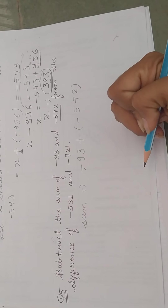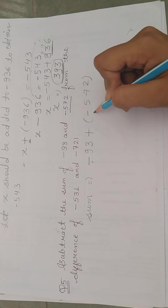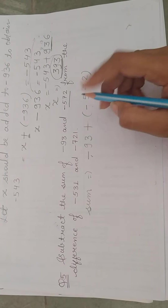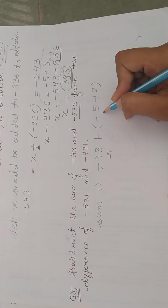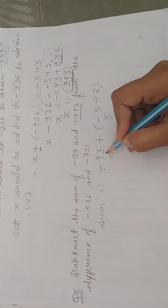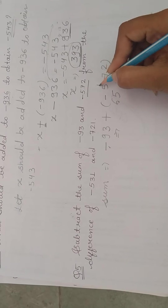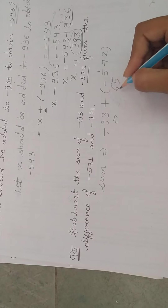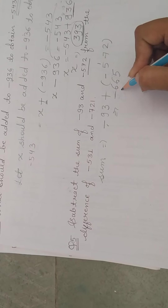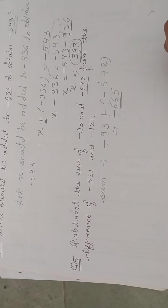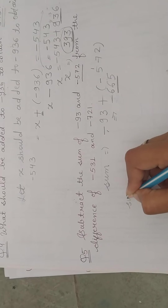यहां पर first integer का sign negative है, second integer का sign भी negative है — दोनों के signs same हैं, यानि addition perform होगा। 2 plus 3 is 5; 7 plus 9 is 16 — write 6, carry 1; 5 plus 1 is 6. Since both signs are negative, our answer is minus 665.